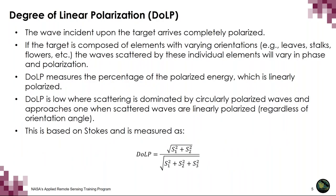The degree of linear polarization is derived from the Stokes parameters. The wave incident upon a target arrives completely polarized, but if the target is composed of elements with varying orientations — for example, leaves, stalks, flowers — the waves scattered by these individual elements will vary in both phase and polarization. The degree of linear polarization measures the percentage of the polarized energy that is linearly polarized. It is low where scattering is dominated by circular polarized waves and approaches one where scattered waves are linearly polarized, regardless of orientation angle. It is computed using S1, S2, and S3.